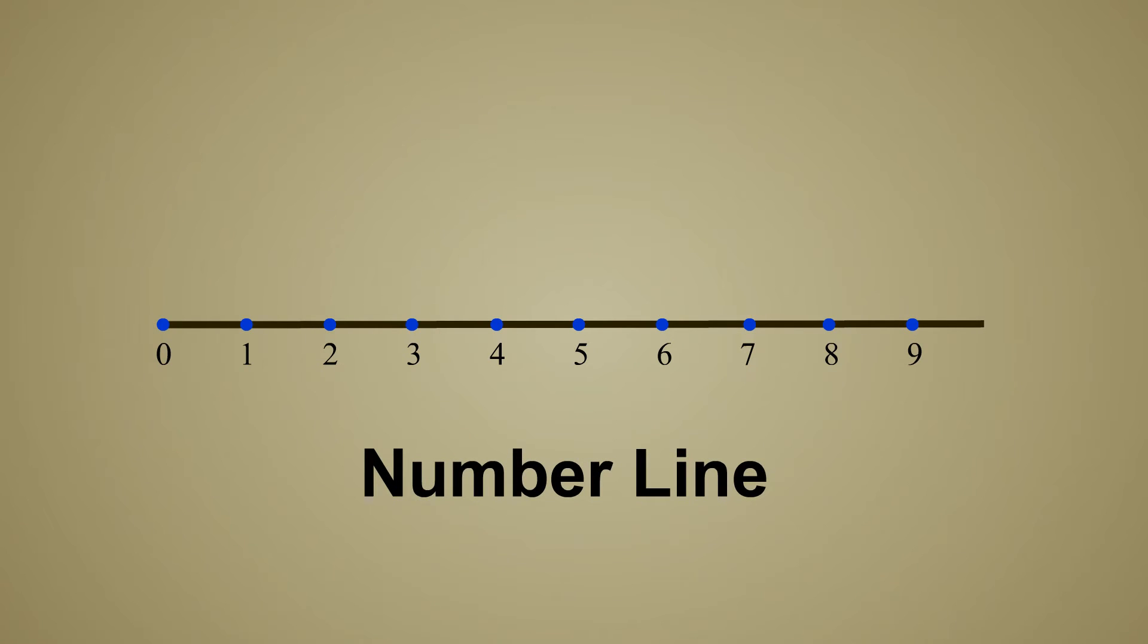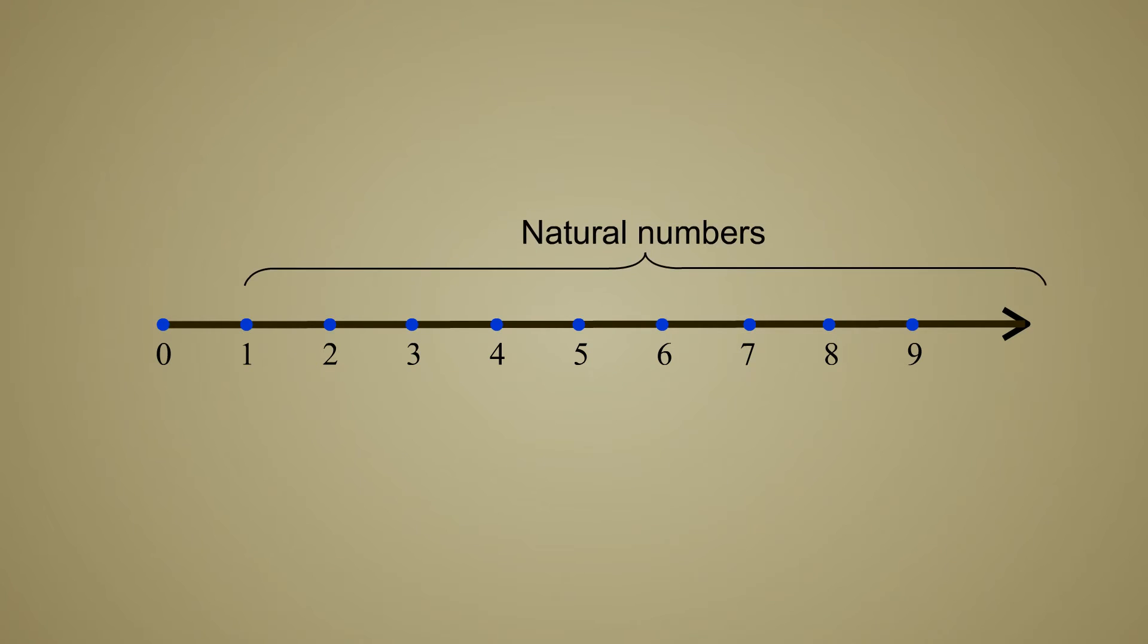Since there are an infinite number of whole numbers, we place an arrow on the right end of the number line to show that it goes on forever in that direction. The natural numbers and the whole numbers both can be represented as points on this number line.